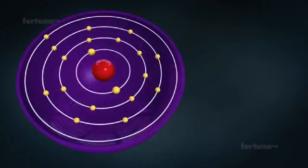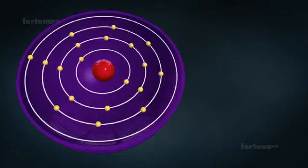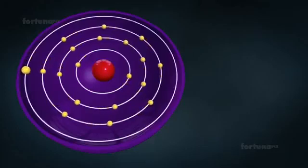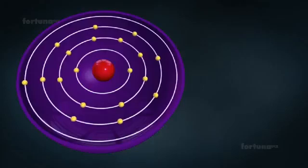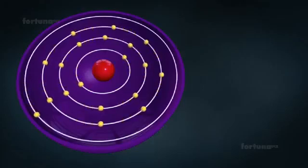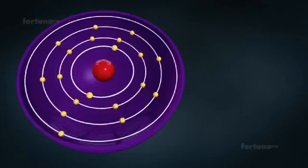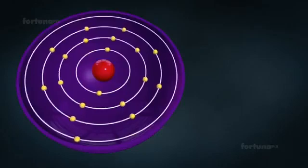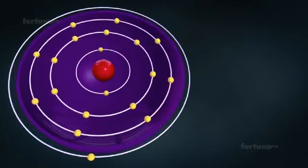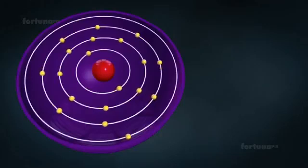Bohr postulated that when electrons are closer to the nucleus, they require less energy than those orbiting from farther away. As a means of differentiating between the energy levels, Bohr numbered them. Energy level 1 will be closest to the nucleus and the larger the number of the energy level gets, the farther away the electron will be from the nucleus.